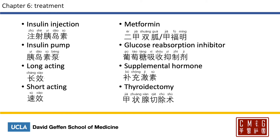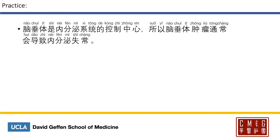Here are some common treatments for endocrine conditions. Insulin injection is 注射胰岛素, versus the insulin pump which is 胰岛素泵. There are many kinds of artificial insulin — some long-acting, 长效, and some short-acting or fast-acting, 速效. 脑垂体是内分泌系统的控制中心 — the pituitary gland is the control center of the endocrine system. Metformin is commonly translated as 甲福明; the official term is 二甲双胍. Supplemental hormone is 补充激素. Iodine deficiency can cause goiter, but goiter can have multiple causes: 碘摄入不足会导致甲状腺肿大，但甲状腺肿大有多种原因。